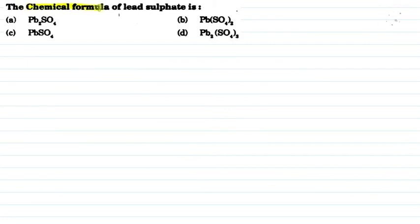The question says that the chemical formula of lead sulfate is: option A, PB2SO4; option B, PB2SO4 subscript 2; option C, PBSO4; option D, PB2SO4 subscript 2. So here we will tell you what the formula of lead sulfate is.